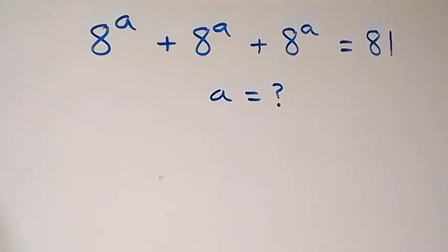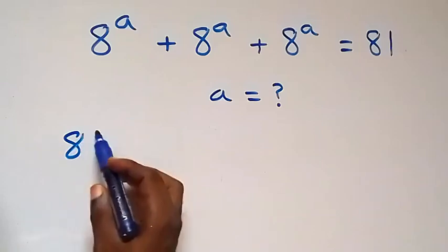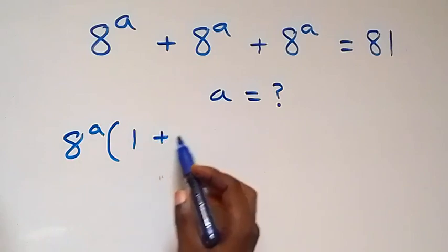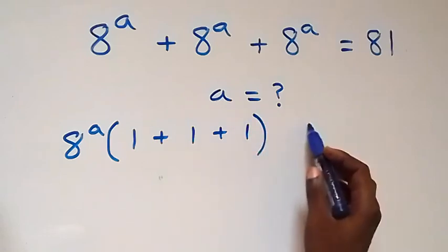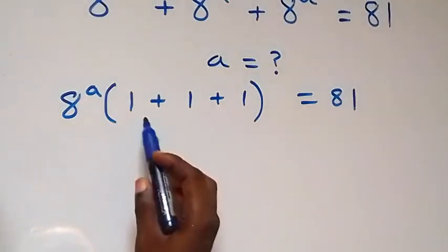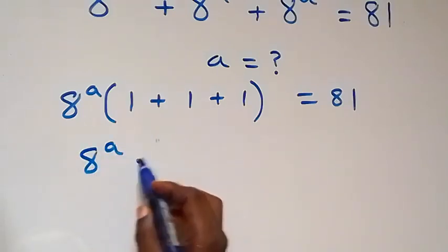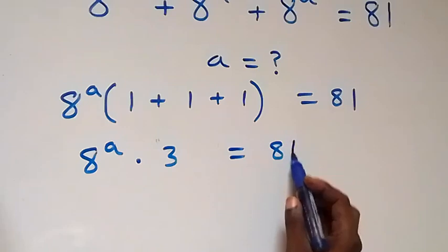Hello, you are welcome. How to solve this nice exponential equation. From what we have here, we factor 8 raised to power a out, then we are left with 1 plus 1 plus 1, which equals 81. Here 1 plus 1 plus 1 is 3, so we have 8 raised to power a times 3 equals 81.